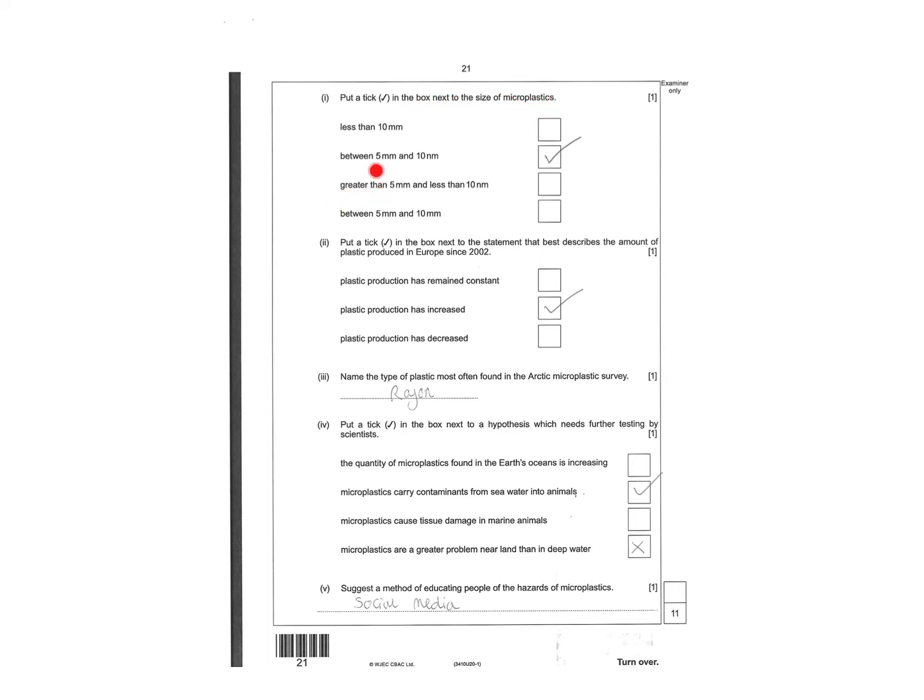Plastic population has increased. Name the type of plastic most often found in arctic microplastic survey is resin. Put a tick next to the box next to the hypothesis which needs further testing by scientists - microplastic carry contaminants from the sea water into animals. Suggest the method for educating people on the hazards of bioplastics - the use of social media. Nice easy question there.